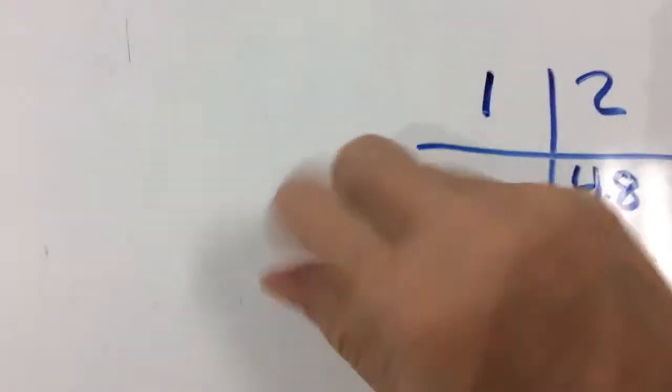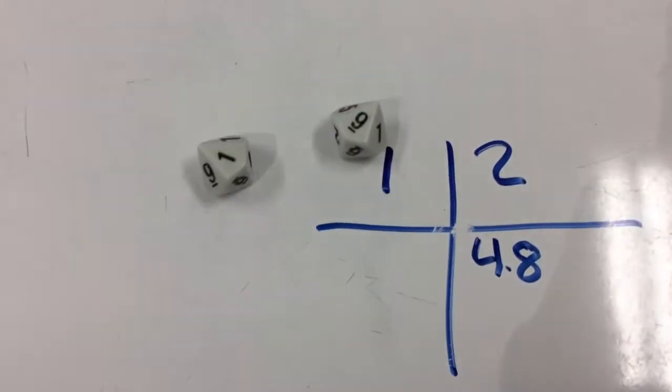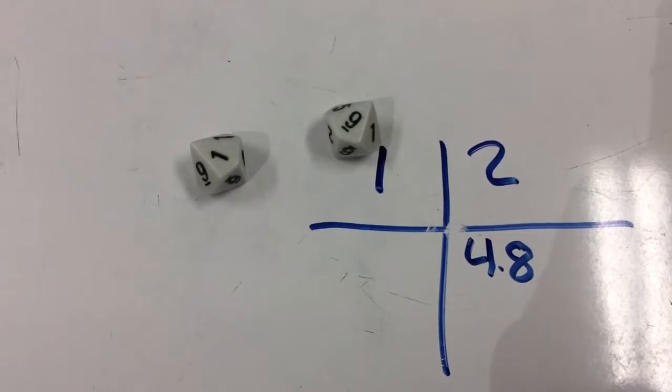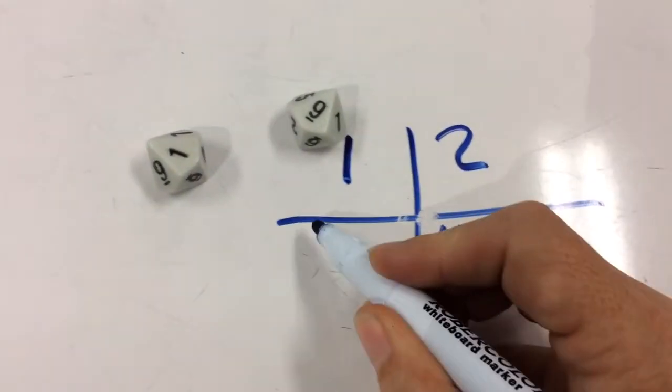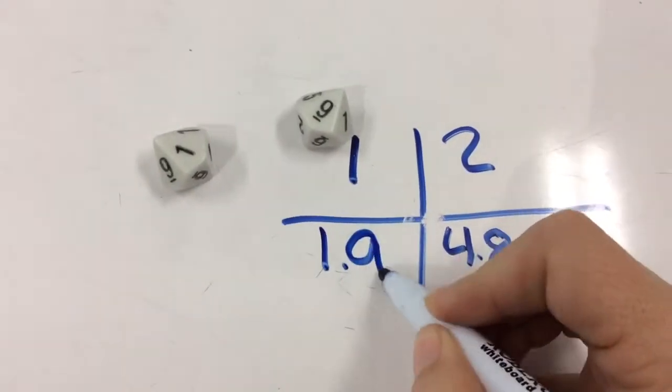Then it would be my partner's turn, they roll the two dice, and they have a one and a nine. So let's say they chose to put it that way, 1.9.